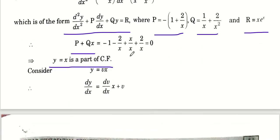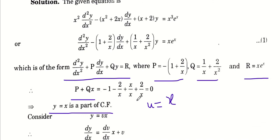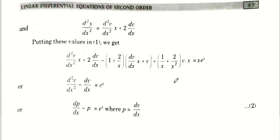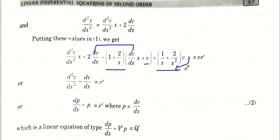Second step में Y को U·V put करना होता है। U की value x है, तो Y = x·V। First derivative करेंगे: dy/dx = x·(dV/dx) + V। Second derivative निकालेंगे। ये सारी values standard form वाली equation में put कर दी। Simplify करने के बाद V वाली terms cancel हो गईं और बच गया dV/dx वाला term।